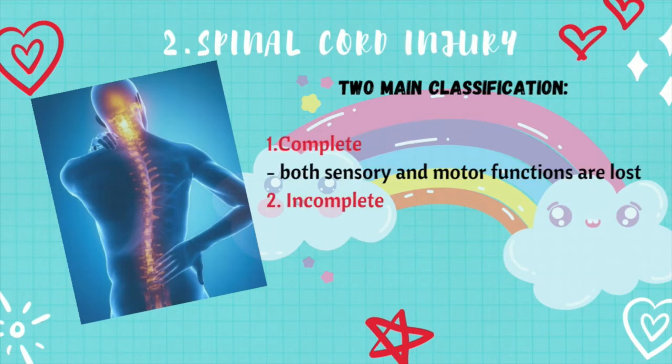Complete injury means both sensory and motor functions are lost. If all feeling — sensory — and all ability to control movement — motor functions — are lost below the spinal cord injury, the injury is called complete. For example, C1 to C3, where the phrenic nerve is, there will be respiratory failure and the patient will be quadriplegic.